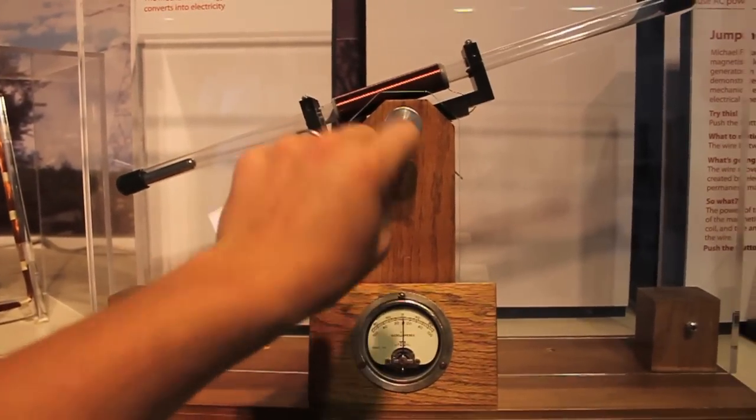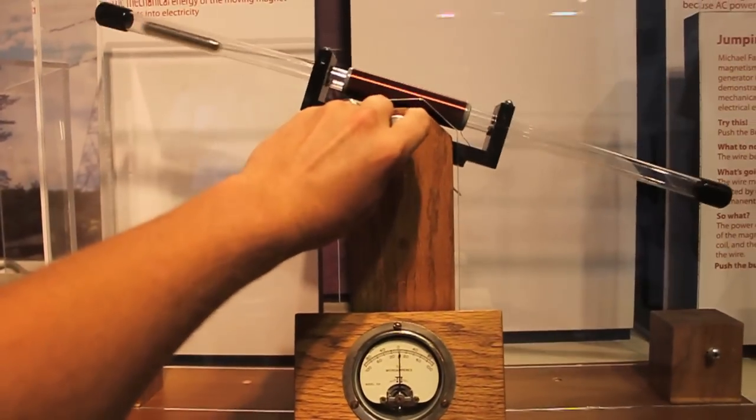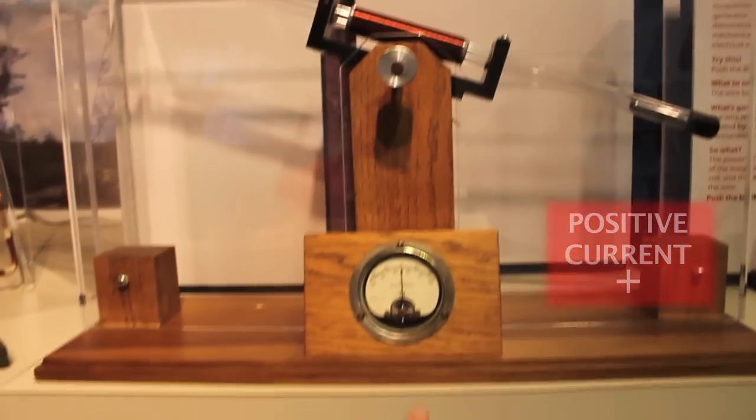So when we twist this, the magnet's going to fall through the coil and you'll get current flow here. So you can see the current spike.